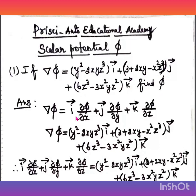First, we have to know what del phi is. Del is i-vector (∂/∂x) plus j-vector (∂/∂y) plus k-vector (∂/∂z). So del phi equals i-vector (∂φ/∂x) plus j-vector (∂φ/∂y) plus k-vector (∂φ/∂z).